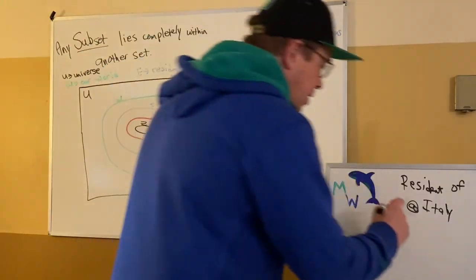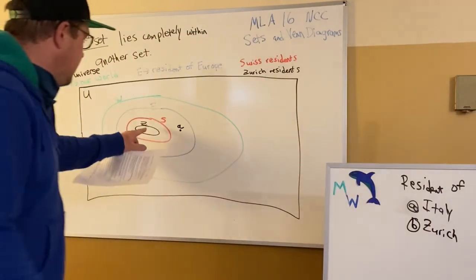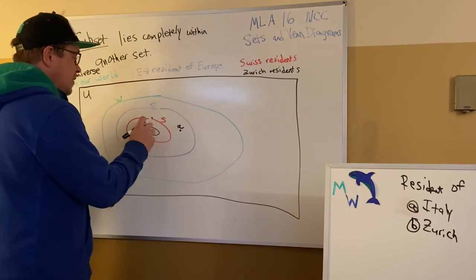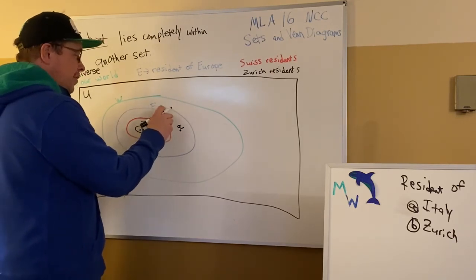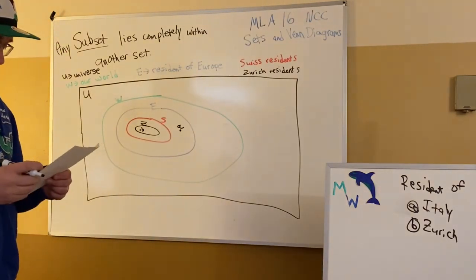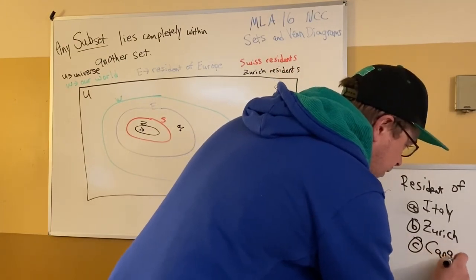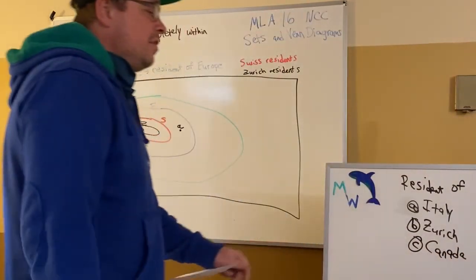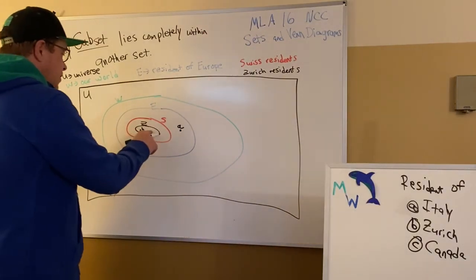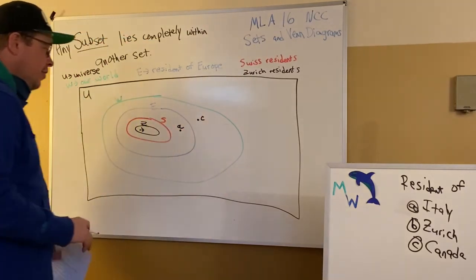Next, we go for someone who lives in Zurich. Start in the middle. They live in Zurich. Yes. Let's put B right there. They live in Zurich. They live in Switzerland. They live in Europe. They live on our world earth. And they live in our universe. Let's go for someone from Canada. Knowledge of geography, again, necessary. Math for liberal arts. You're supposed to know this. Canada. Not in Europe. Part of North America. Not Zurich. Not Switzerland. Not Europe. But is on earth. Our world. So, here's the Canadian.